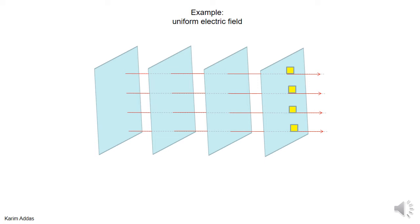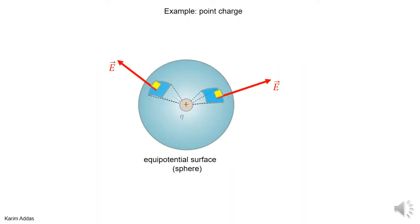We want to see in these slides if there's anything special about the relationship between the direction of the electric field and equipotential surfaces. Going back to the problem with a uniform electric field, we saw that the equipotential surfaces are planes perpendicular to the electric field. So the electric field vectors are always perpendicular to the equipotential surfaces. Is this just specific to this problem, or is it always the case?